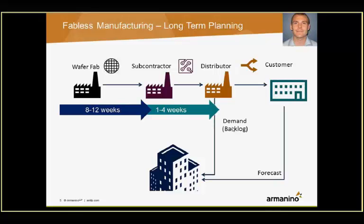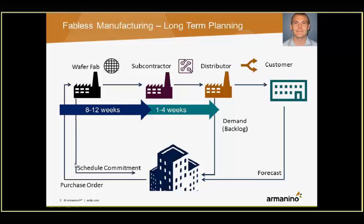Once you have information from your customer — a forecast, or you've designed your product into a finished good end item and have a general run rate of how many cell phones are going to be built over the course of the next 12 months — you have an idea of the forecast for the orders. Once orders do come in, we call that demand or backlog, and we need to be able to fulfill against those. Key supply chain integration aspects here are the forecast and order on the demand side, as well as purchase orders, purchase order schedule commitments, and ship notifications on the supply side.